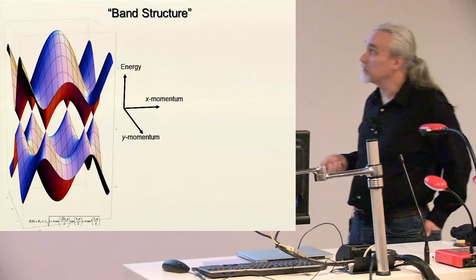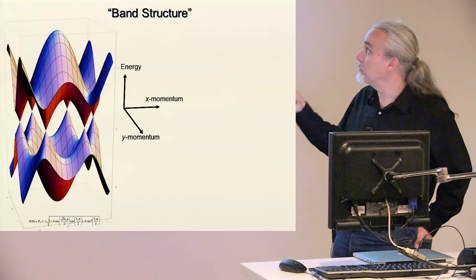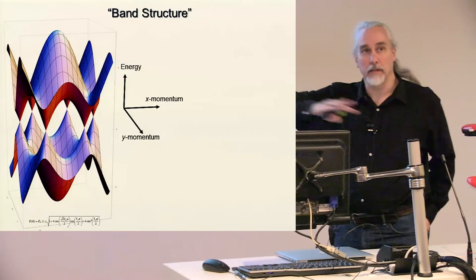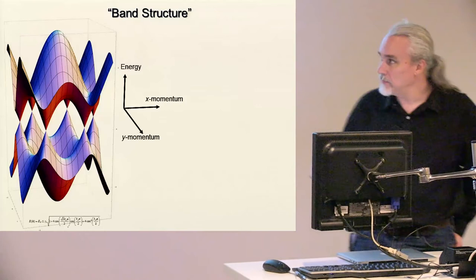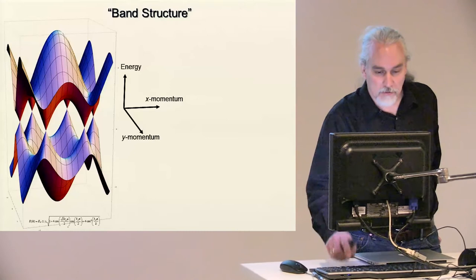The way that physicists like to think about a material is in terms of what we call band structure. This is a picture where I've plotted the energy that the electrons can have as a function of their momentum in two directions—x and y momentum—and those are the directions that the electrons are traveling within the plane of the graphene. This is actually the expected band structure for graphene. It follows a fairly simple equation, but the important thing is to notice some special features in this structure.